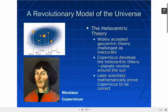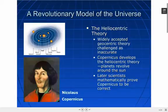The geocentric theory held that everything revolves around the earth. Copernicus is basically saying that that's not right. Later, scientists are able to prove that Copernicus is correct. But we should note that Copernicus, during this time, faces a lot of conflict with the church because of his beliefs.